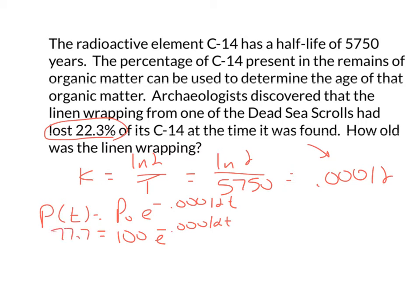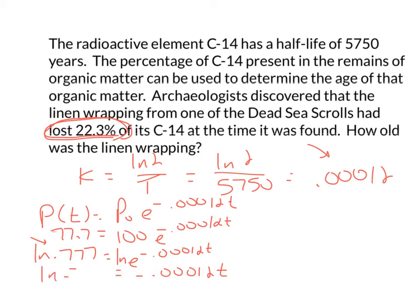So I divide both sides by 100, giving me 0.777 equals e to the negative 0.00012·t. Whatever they tell you was lost or left, you put that decimal on this side — that's what's left. To solve this, since there's an e, I take the natural log of both sides. On the right I just get negative 0.00012·t, and on the left I have the natural log of 0.777.